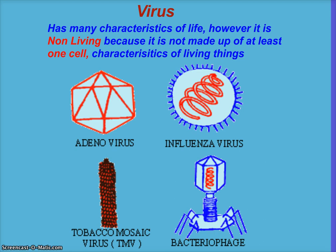Now a virus can reproduce. A virus can transfer energy. A virus can evolve, adapt, change, and respond to stimuli. So it basically can do almost everything a living thing can do, except it doesn't have a cell. So it's not living. How do you kill something that's not living?